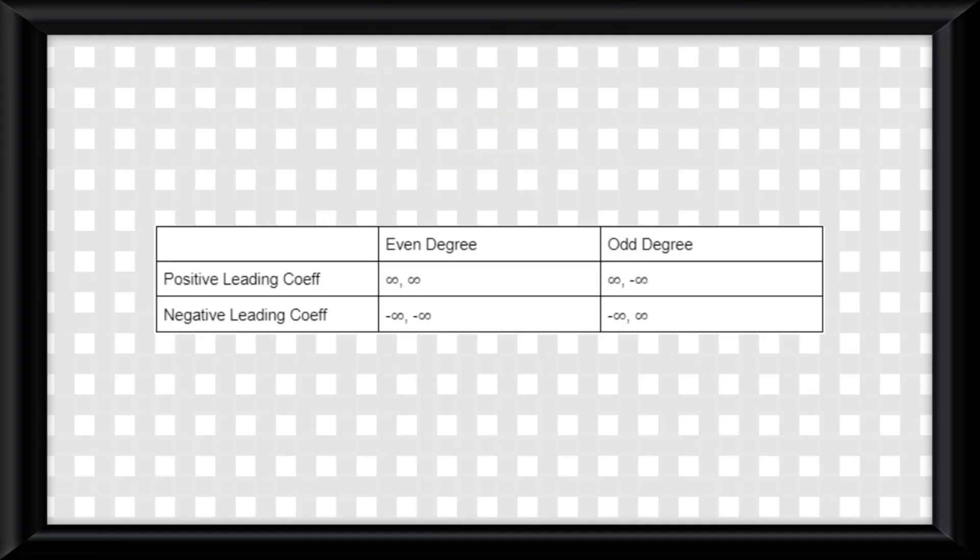The fact is, you will always have at the start of your end behavior equations, the limit as x approaches infinity, and the limit as x approaches negative infinity. This table shows what y would equal under the different scenarios.